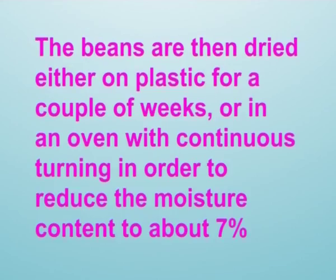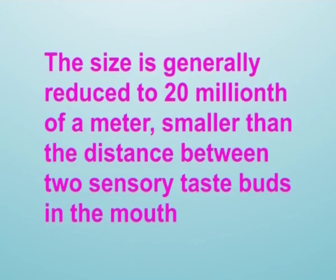The prepared drink can be made using milk, rice milk, soya milk, or water with spicing if desired. The beans are then dried either on plastic sheeting for a couple of weeks or in an oven with continuous turning to reduce moisture content to about 7 percent, then packed to be sent to chocolate factories, mostly overseas. Refining: the mixture is refined through a series of rollers to give the chocolate its consistency by reducing the particle size so it cannot be felt on the tongue, generally reduced to 20 micrometers.